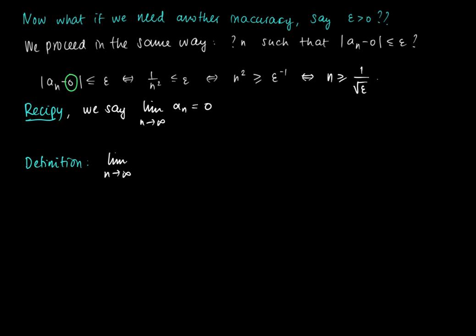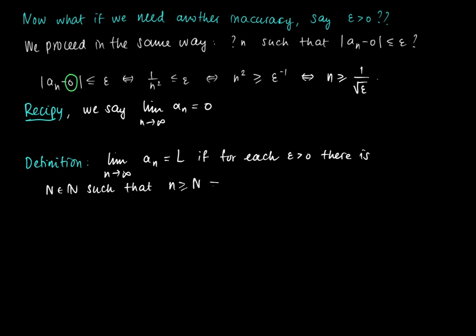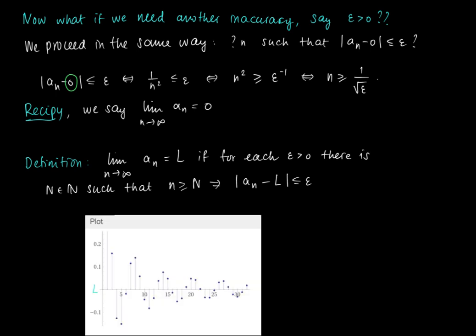This motivates the following formal definition: the limit as n → ∞ of a_n equals L if for each epsilon > 0 — where epsilon is the inaccuracy — there exists a natural number capital N such that for all indices n > N, the difference |a_n - L| is at most epsilon. Here we see a plot of some sequence where L is the limit value.